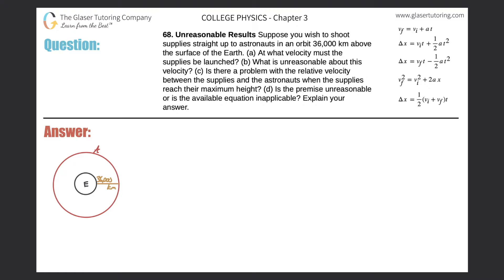Number 68, unreasonable results. Suppose you wish to shoot supplies straight up to astronauts in an orbit 36,000 kilometers above the surface of the earth. At what velocity must the supplies be launched? All right, so here's a picture. We have to make a couple of assumptions. I have the earth in black, the astronauts circling in their orbit in red, and the distance between the two is going to be 36,000 kilometers.